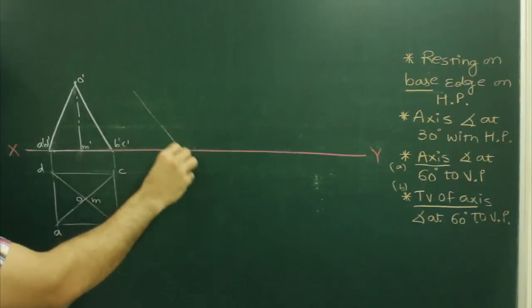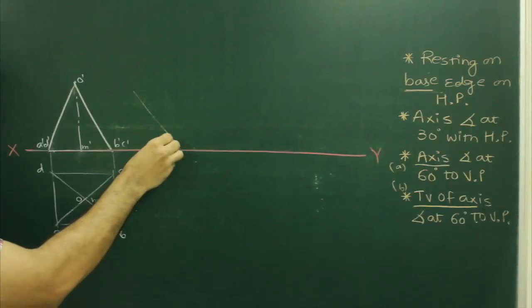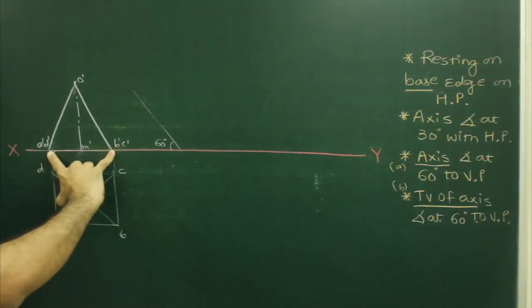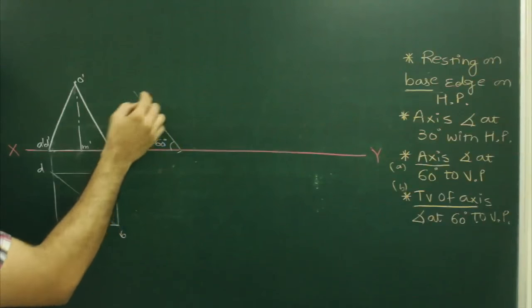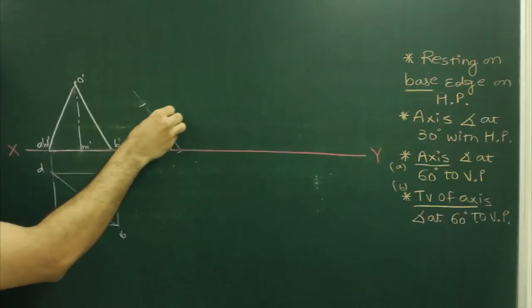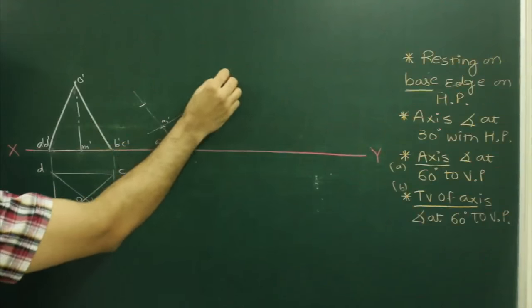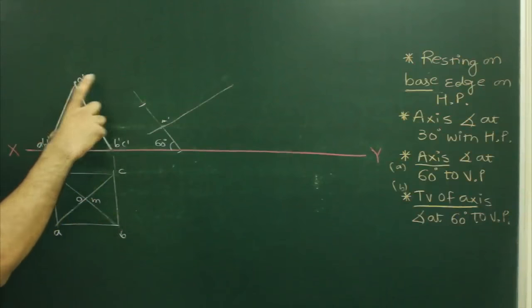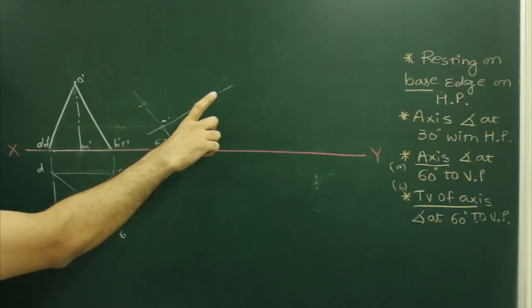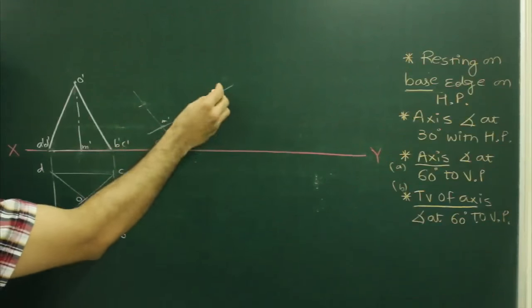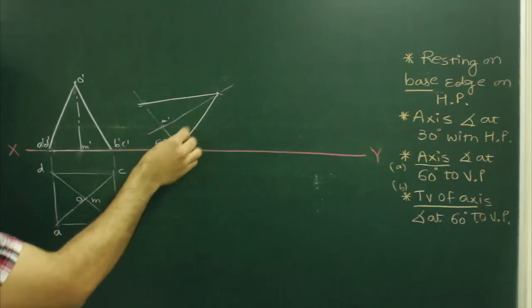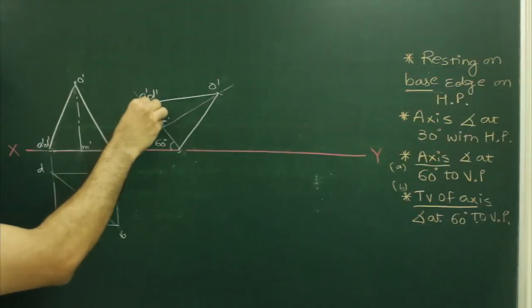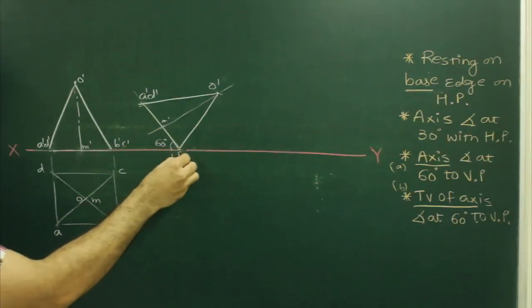We draw the base inclined at 60 degrees. Then we take B dash, C dash to A dash, D dash and cut on this side. For M dash, we draw the 30 degree line, or we take A dash, D dash to O dash and cut on this side. So we get O dash, A dash, D dash, B dash, and C dash.